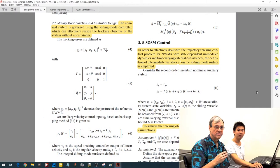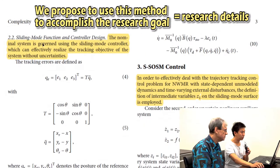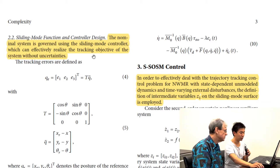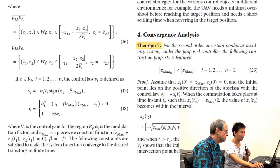Now we'll look for the research details in the mechanical engineering article. Continuing from the framework components, we start with subsection 2.2, 'sliding modification and controller design.' There are about three to four parts: each states a problem and then proposes or employs some method to achieve a particular purpose. For example, 'the nominal system is covered using the sliding control' — meaning the sliding mode controller is employed to obtain the nominal system.